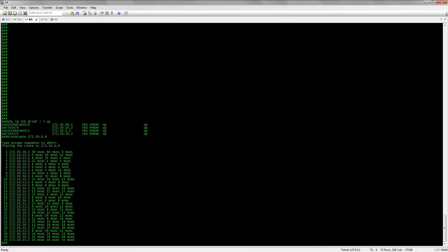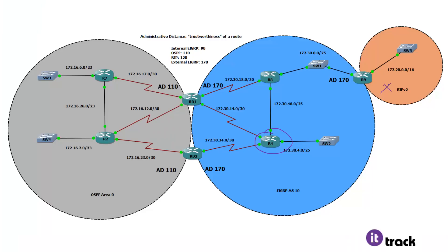The only thing that kills this looping process is the default maximum TTL on the router of 30. So what path does R4 think is best? R4 thinks the best way to get to the network is through RD2, and RD2 is sending that information because it thinks the best way is through RD1, and RD1 actually thinks the best way is back through R4. So they're all trying to reach that RIP network and they just go around and around like this forever.